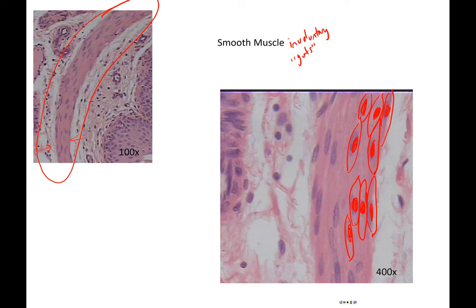This is the muscle of your guts. You will find smooth muscle in your blood vessels, in your bronchioles, in your stomach, small and large intestine, esophagus, urinary bladder, and uterus. So again, it is the muscle of your organs.